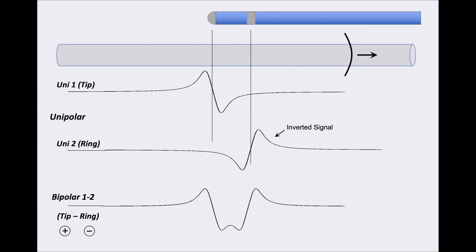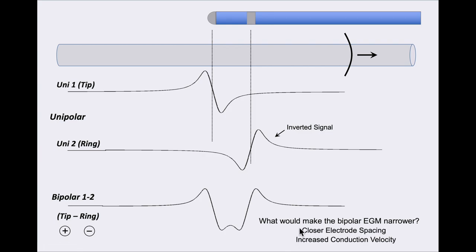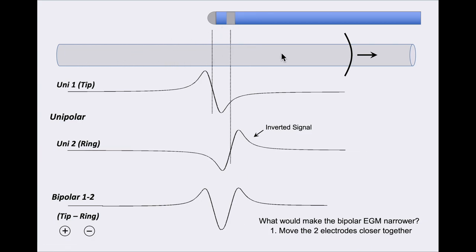The bipolar electrogram is the signal recorded from unipolar 1 minus the signal recorded from unipolar 2. An easy way to think about that is to invert unipolar 2 in your mind and add them together — you get the bipolar electrogram. There are two main factors that influence the width of the bipolar electrogram: electrode spacing and conduction velocity. Closer electrode spacing means the wave reaches the second electrode more quickly, pulling the two peaks closer together. Higher conduction velocity similarly pulls in the second peak, making the bipolar electrogram narrower.